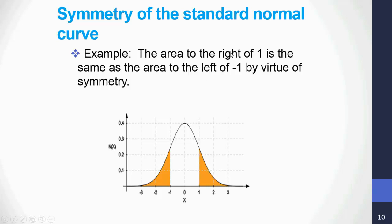Suppose we are asked to find the area to the right of 1. When we position 1 here and highlight the area, we can quickly see that this area to the right of 1 is the same as the area to the left of negative 1 by virtue of symmetry. So symmetry gives us convenience — if asked to find the area to the right, I can instead find the area to the left of negative 1 and get the same answer.